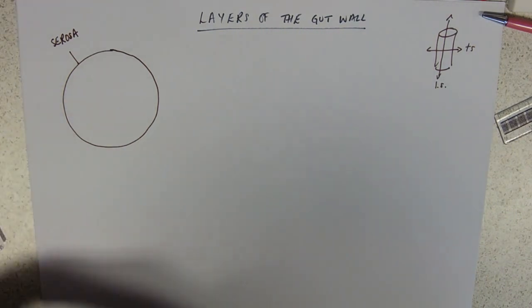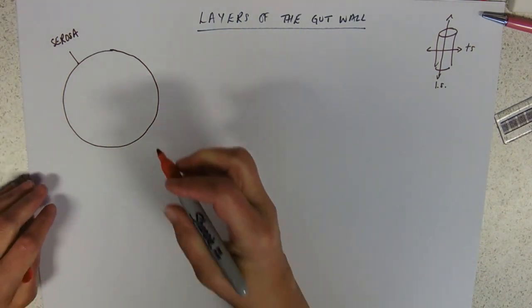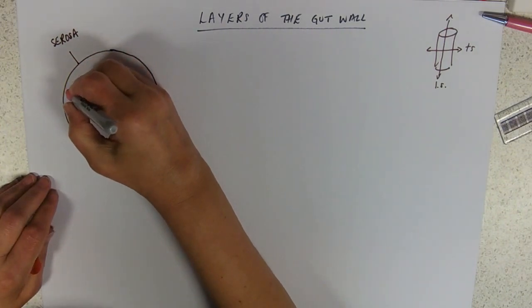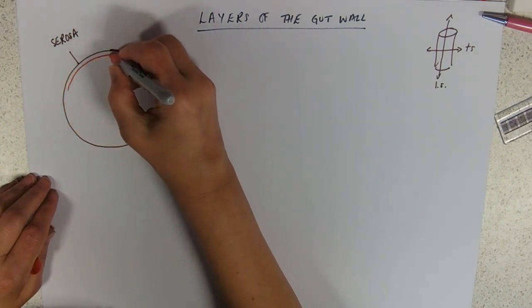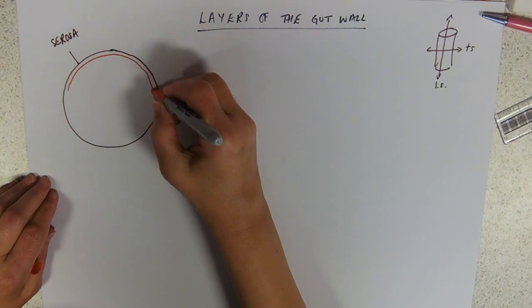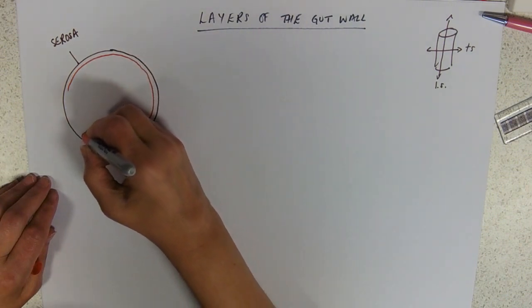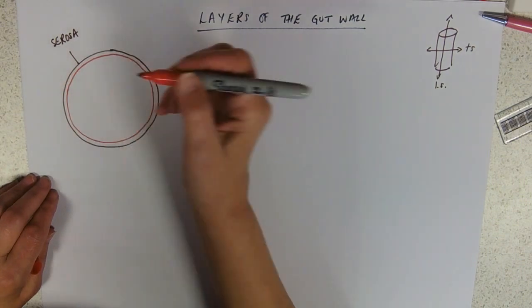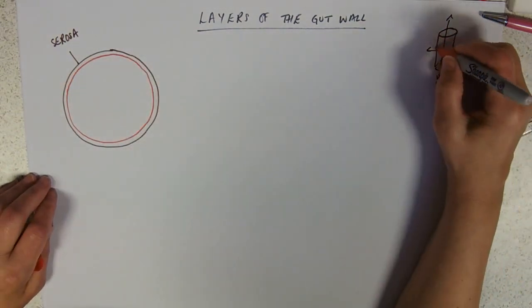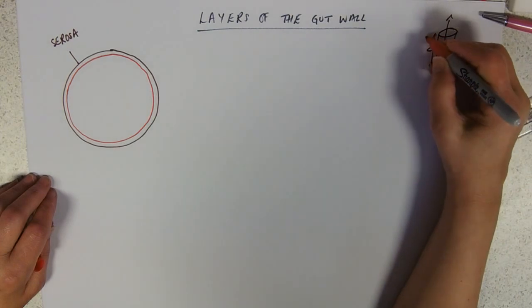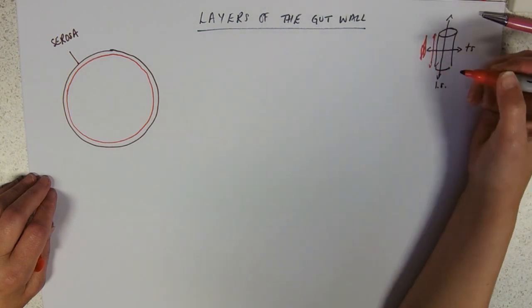Just underneath the serosa we've got a layer of longitudinal muscle. The fibers are arranged up and down the gut. This is all smooth muscle, so those fibers are looking like that.